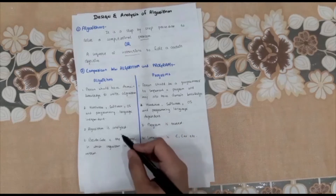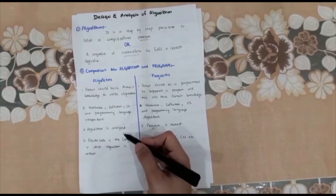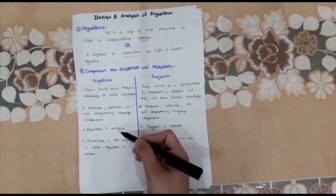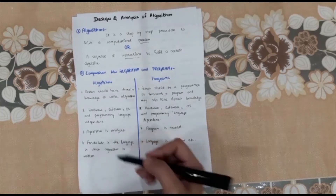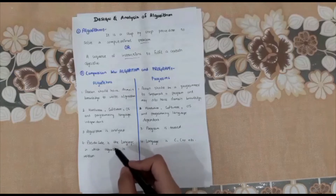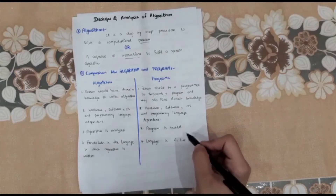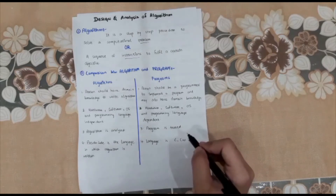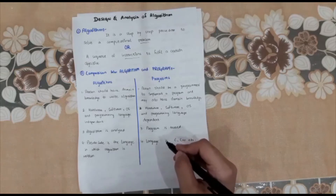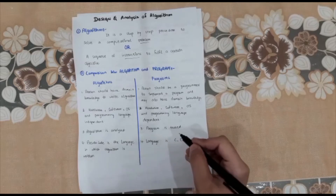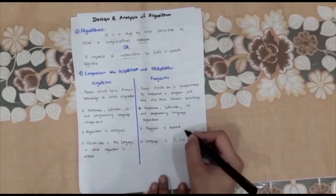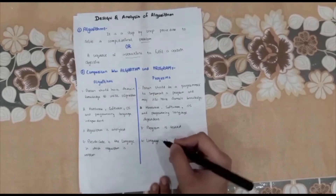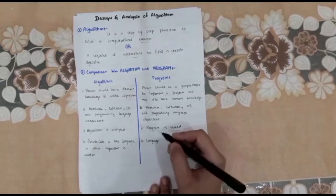Moving to the next point: an algorithm is analyzed. We are talking about Analysis of Algorithm — we analyze how much time, how much space, how much CPU, how much power consumption, and different criteria. But a program is tested — we test it for different types of errors: syntax errors, logical errors, and runtime errors. If there is a bug, then we do debugging.